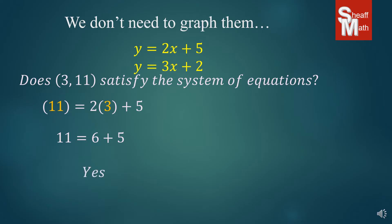So this is a yes. (3, 11) is on the first equation's line. Now, the next one, we make sure we put 3 in for x, 11 in for y, and we're going to simplify. And we get 11 equals 9 plus 2, and again, this works. 9 plus 2 is 11.